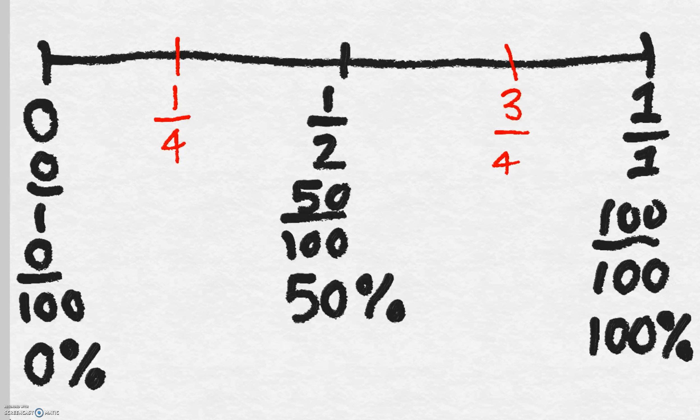Let's have a go at writing those as percentage. So 1 quarter - what is 100 divided by 4? Well, 25 plus 25 is 50, plus 25 is 75, plus 25 is 100. So 1 quarter is equivalent to 25 over 100, 25 out of 100.